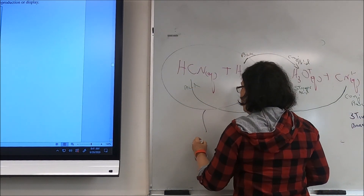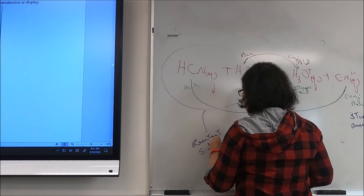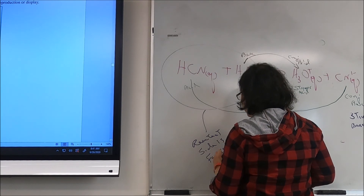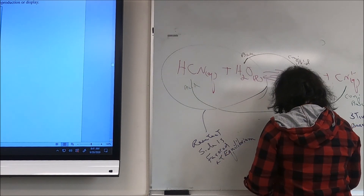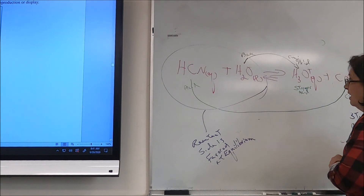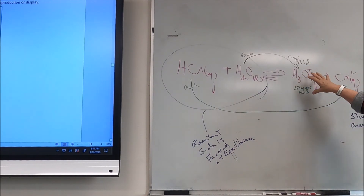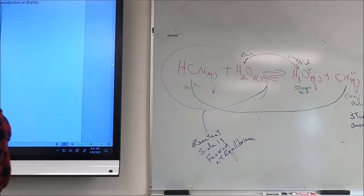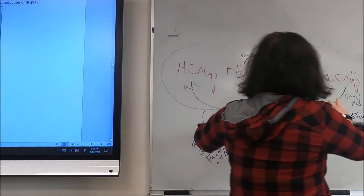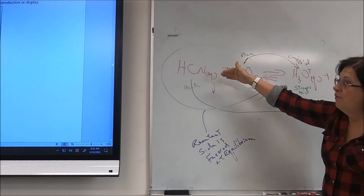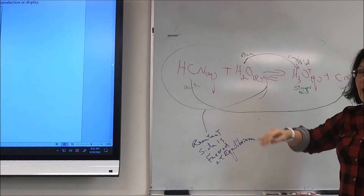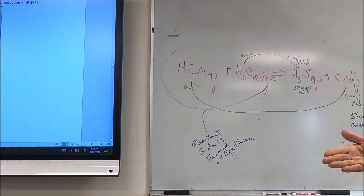Since the stronger acid and stronger base are on the product side, the reactant side is favored at equilibrium. In a competition between HCN and H₃O⁺ to donate hydrogen, H₃O⁺ wins, forcing things back toward the reactant side. So at equilibrium the concentrations of HCN and water will be much higher than hydronium ion and cyanide ion.